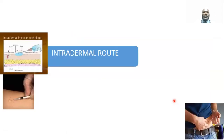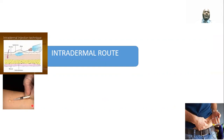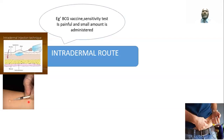The intradermal route involves administering the drug into the skin-raising bleb. For example, BCG vaccine administration, or sensitivity tests such as the tuberculin test. You inject a small amount of drug and observe the hypersensitivity or sensitivity of the individual. It is used for diagnosis of Mycobacterium tuberculosis and to determine drug sensitivity, such as penicillin hypersensitivity.